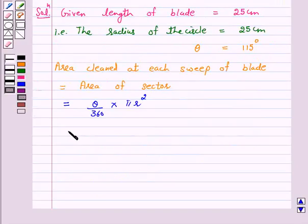So this is equal to 115 upon 360 into, take pi is 22 by 7 into 25 into 25 cm square.